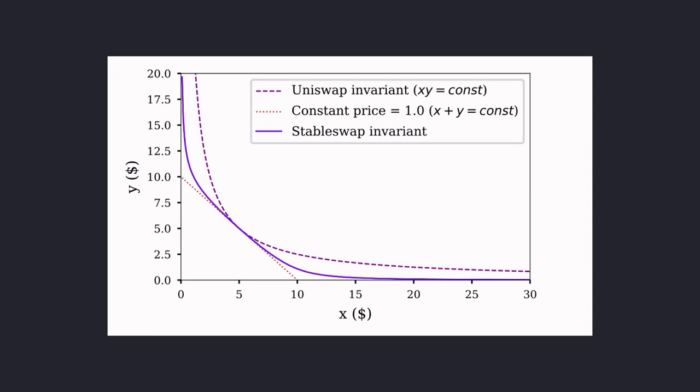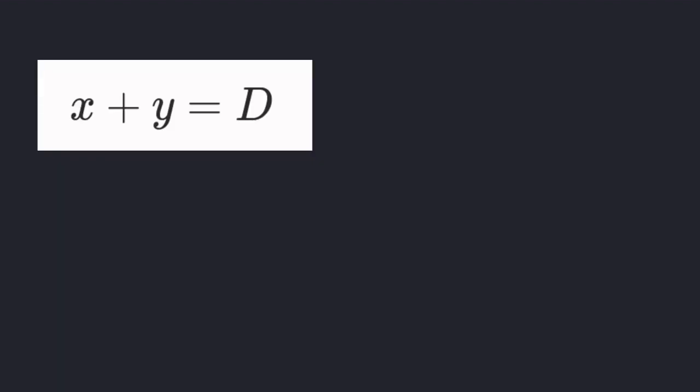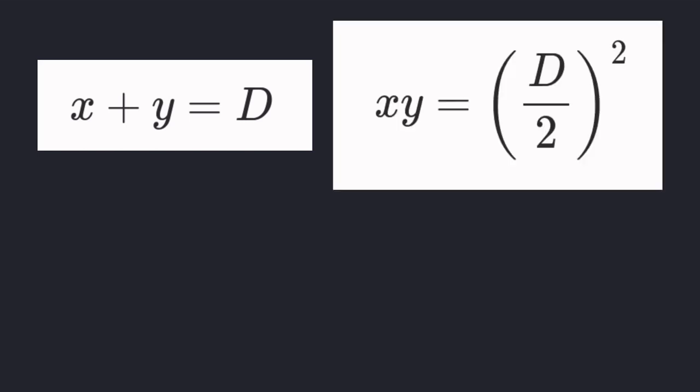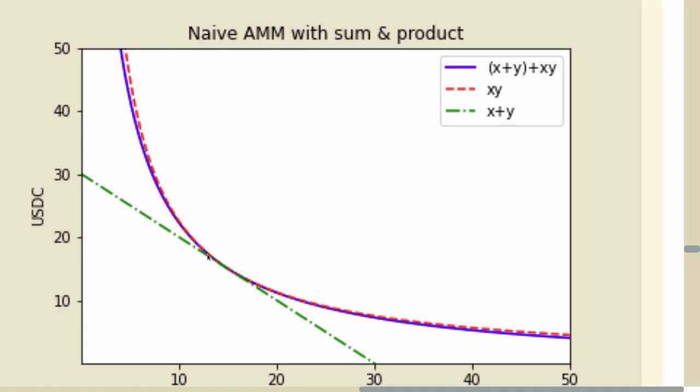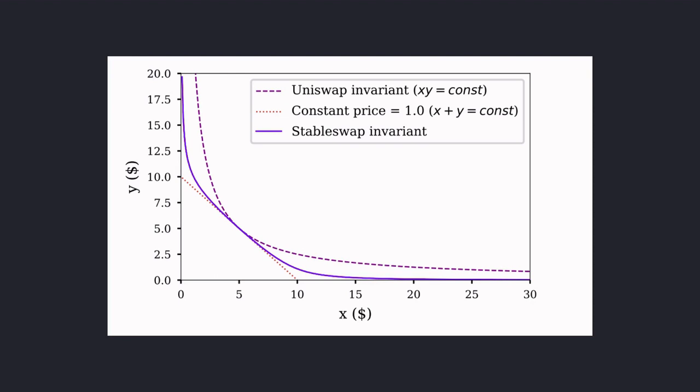Let's try creating this curve. We'll start with the condition that says x plus y equals a constant d. And we also use the constant product formula x times y equals d over 2 to the power of 2. Combining the two equations above, we get the equation below. However, plotting this equation, we get a graph that looks like this. It still looks like the curve of Uniswap. And not something like this, where it is flat in the middle.